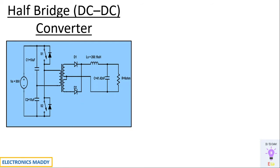Let's get into the design procedure of a half bridge DC to DC converter. These are our assumptions or requirements. Every design requires certain assumptions to be made based on the application. I am designing it for an output voltage of 17.5 volt and a power rating of 38.28 watt. The switching frequency that I have chosen is 150 kilohertz.